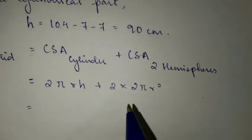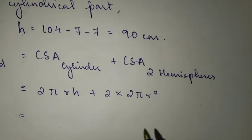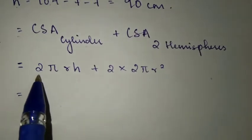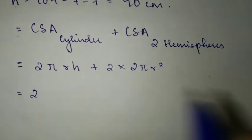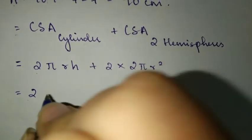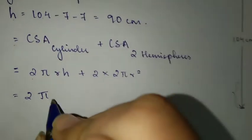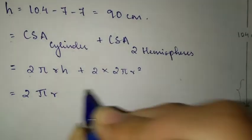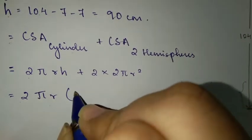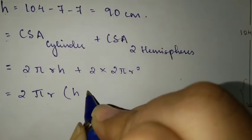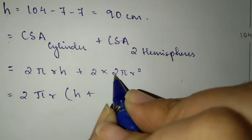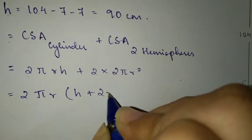Now let's take out the common terms over here. We can get 2 as common in both terms. Pi is also common. After that, since both have the same radius, we can factor out r. We get h plus 2r.